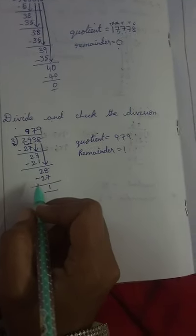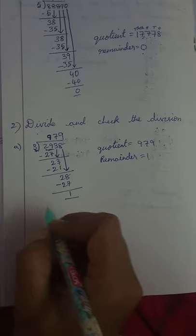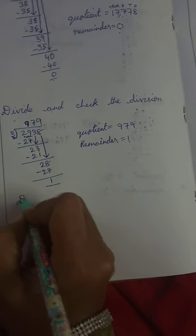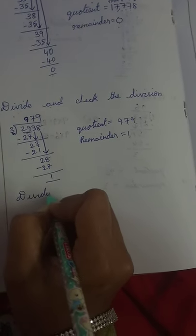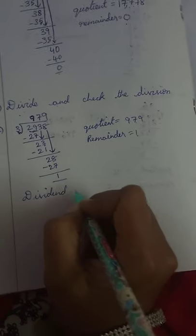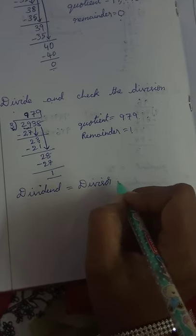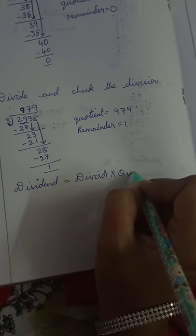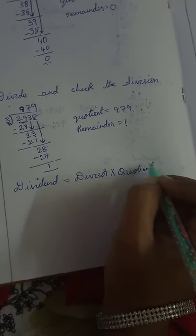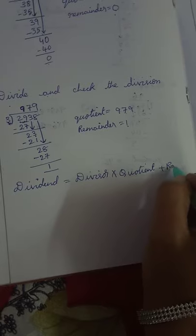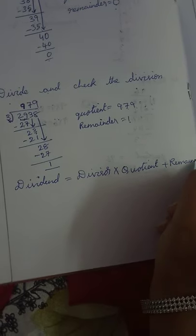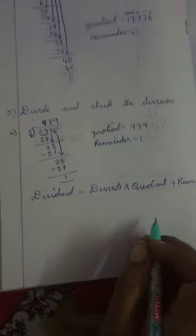Now we check if the division is correct or wrong. What is the formula? Dividend equals divisor into quotient plus remainder. You must write this formula.